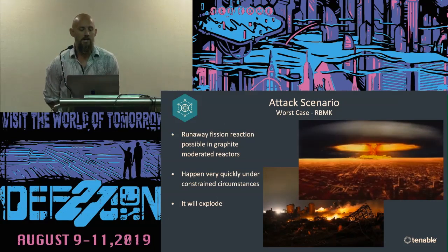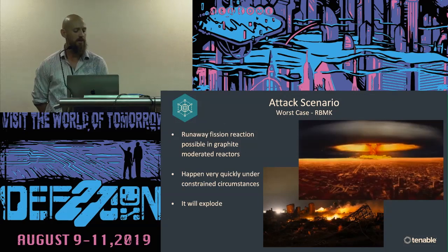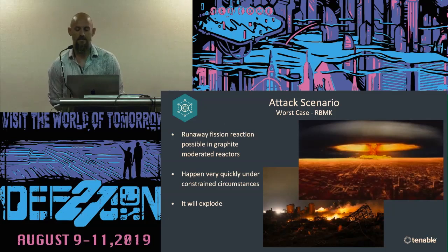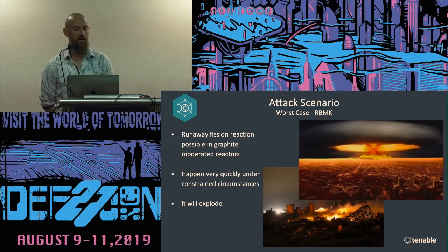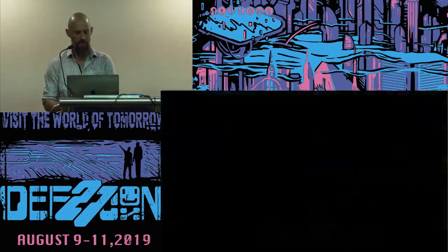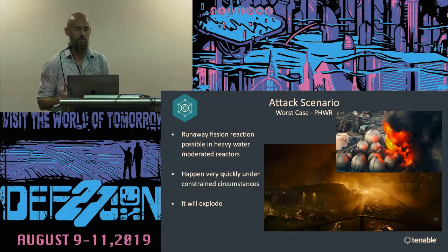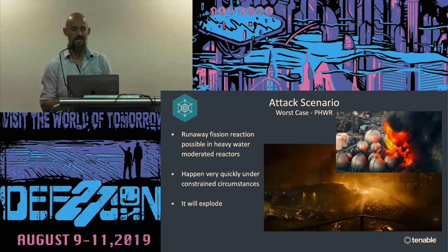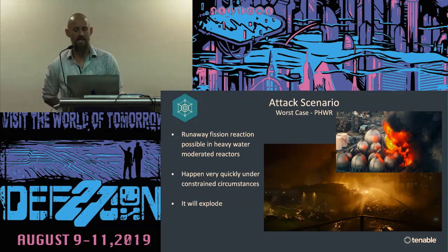Worst case scenario: the RBMK, since there are still three in action in Russia. They're extremely unstable — they have this design parameter where fission can end up on a thermal feedback loop making fission run out of control. They rely entirely on logical control systems to maintain stability. If an attacker achieves control of the safety and control systems, they could very easily cause a catastrophic explosion. Another vulnerable design is the CANDU or PHWR, used in Canada and India — more stable than the RBMKs, but less stable than light water reactors. Because they use unenriched uranium, fission reactivity can increase and produce a runaway fission reaction.